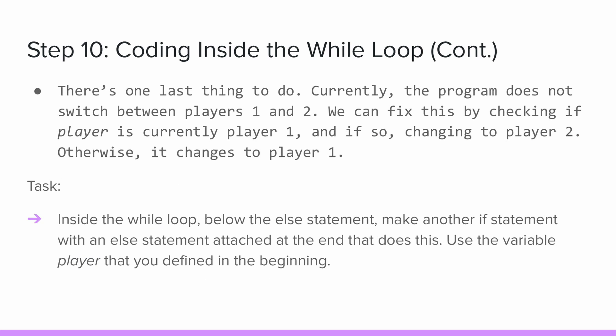There's one last thing to do. When you ran your code during the check-in, you might have noticed that the program does not switch between players one and two. How can we fix this? Well, after we run the loop once, we can check if the variable player is player one. If it is, we'll change it to player two, and if it's not, we'll change it back to player one. Inside the while loop, make another if-else statement that will do this. Pause the video now and write your code.